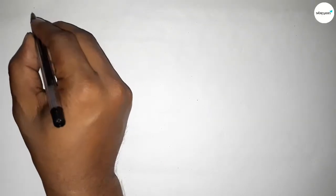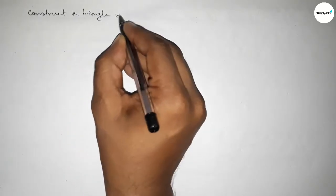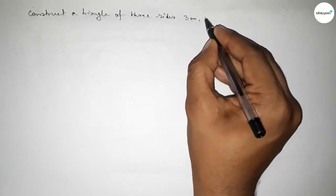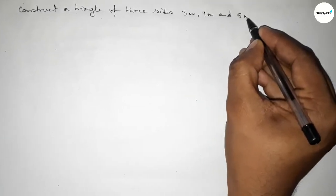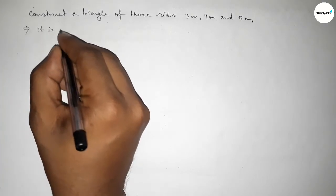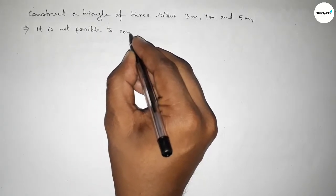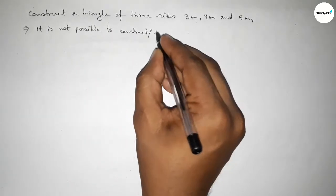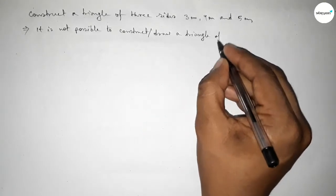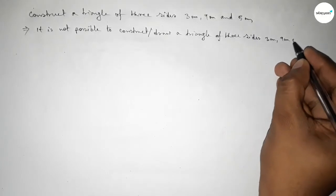Hi everyone, welcome to SSR Classes. Today we have to construct a triangle with three sides: 3 centimeter, 9 centimeter, and 5 centimeter. First of all, it is impossible to construct or draw a triangle using these three sides.